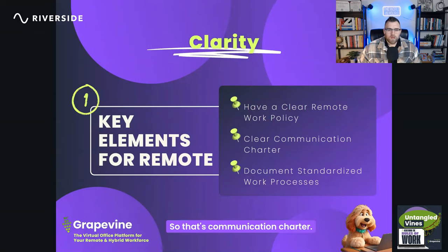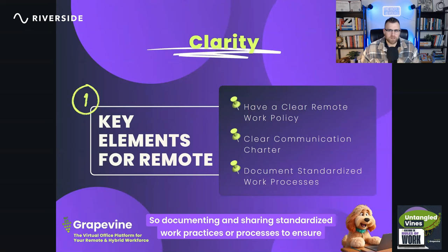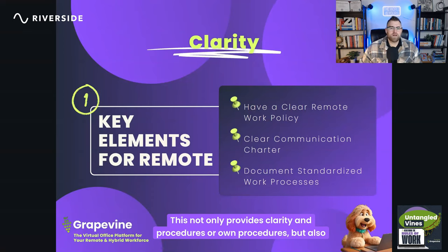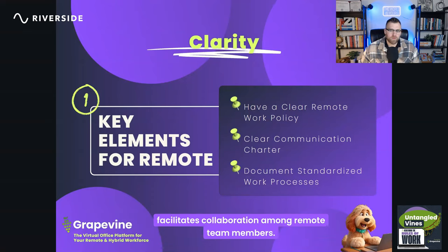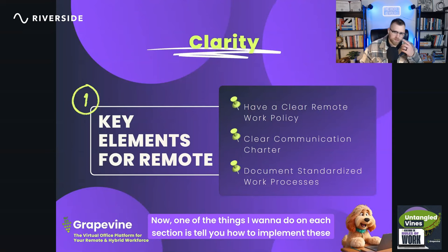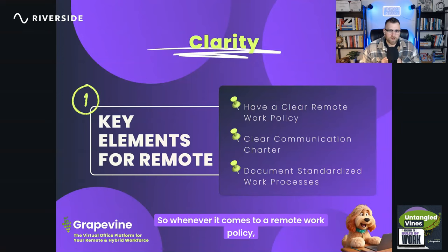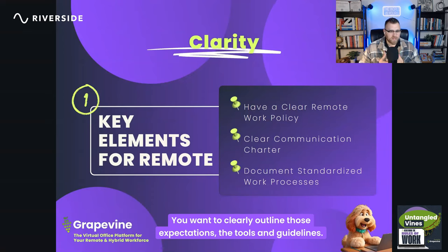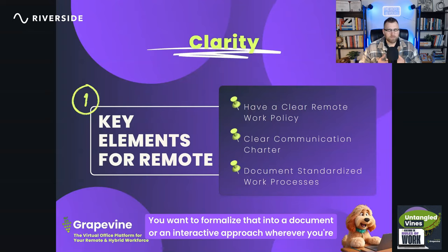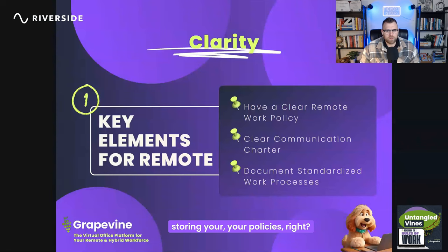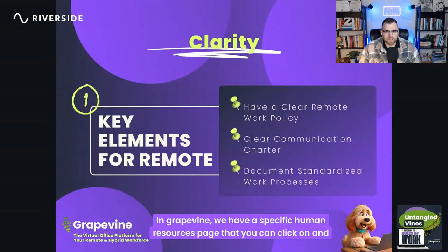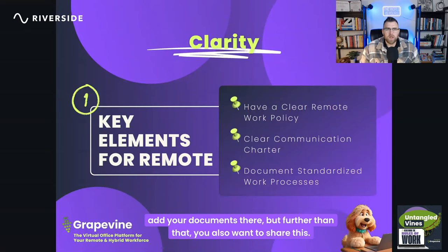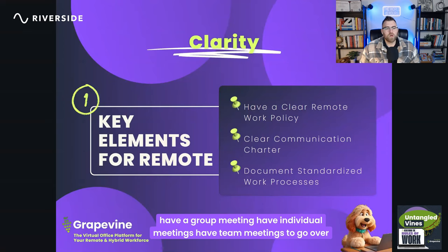The third element is documenting standardized work processes — sharing standardized practices to ensure consistency in how tasks are carried out. This provides clarity in procedures and facilitates collaboration among remote team members. When it comes to implementing a remote work policy, clearly outline expectations, tools, and guidelines, formalize that into a document, and store it — in Grapevine we have a specific HR page where you can add documents. Then share it, enable people on it, and hold meetings to go over what it means.